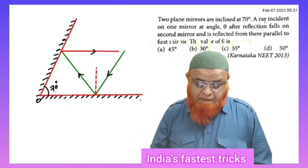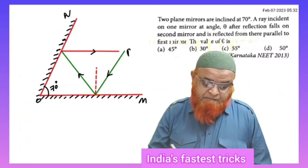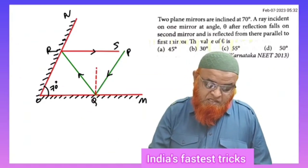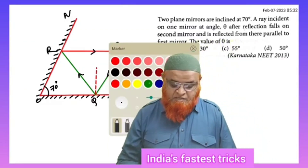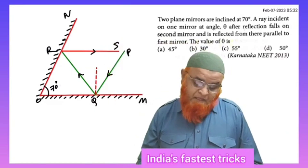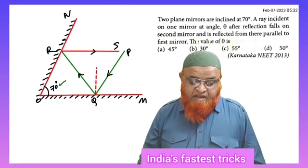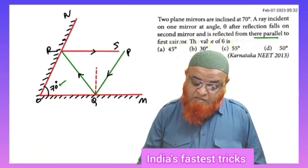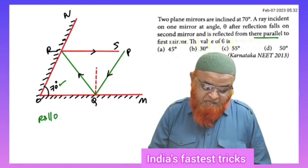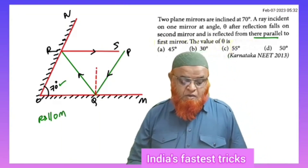These are the two mirrors. Let us consider this is mirror OM and this is ON. This is light ray P, Q, R, and S. The angle between the two mirrors is given as 70°, and it is also said that RS is parallel to OM.